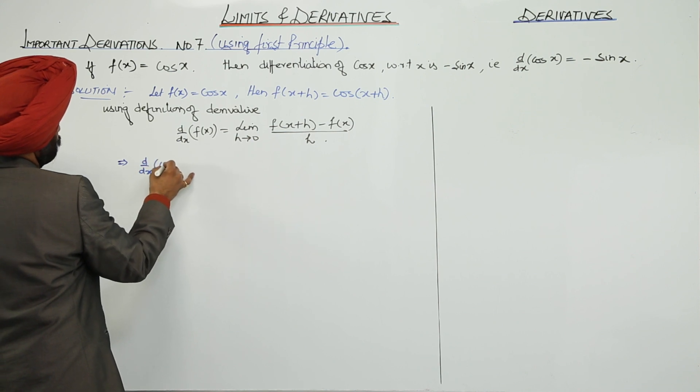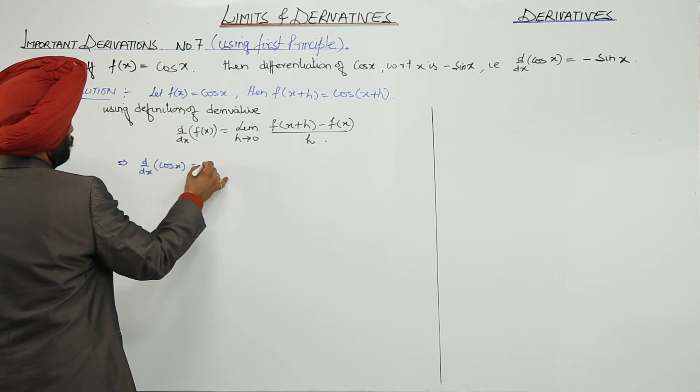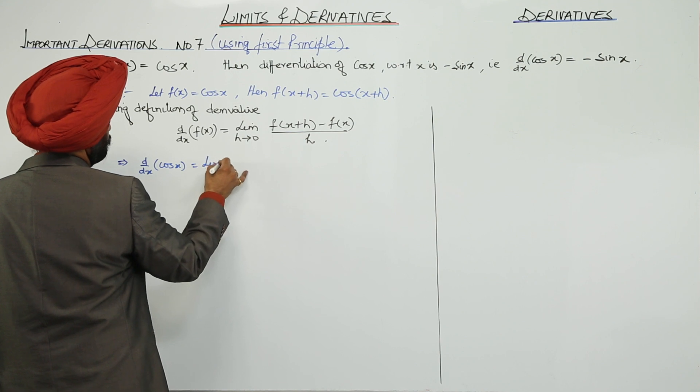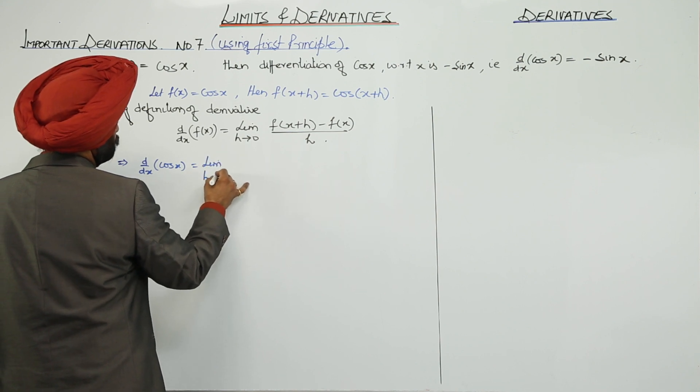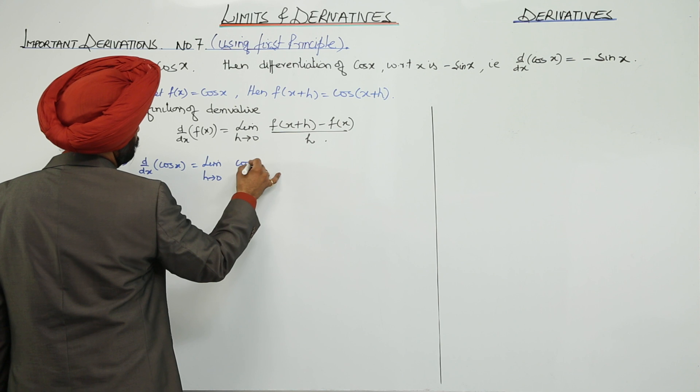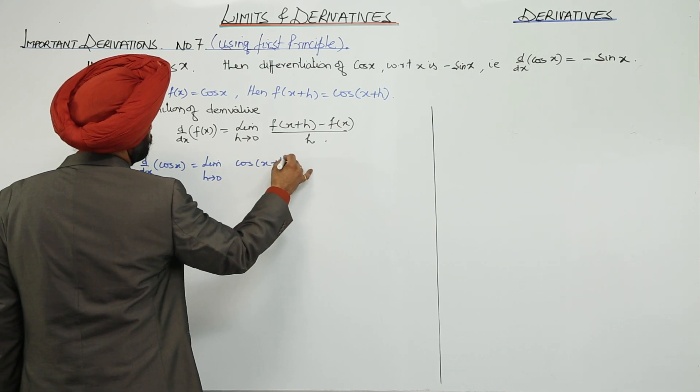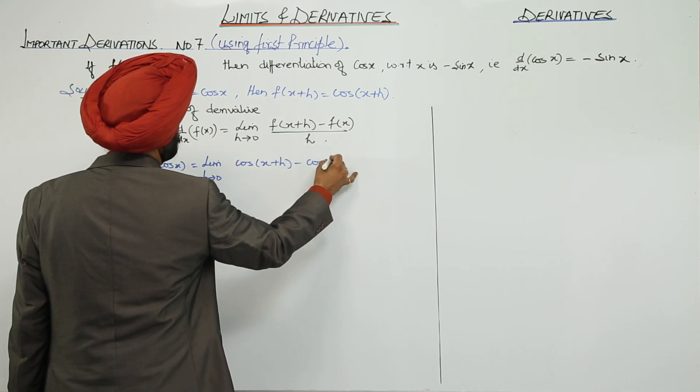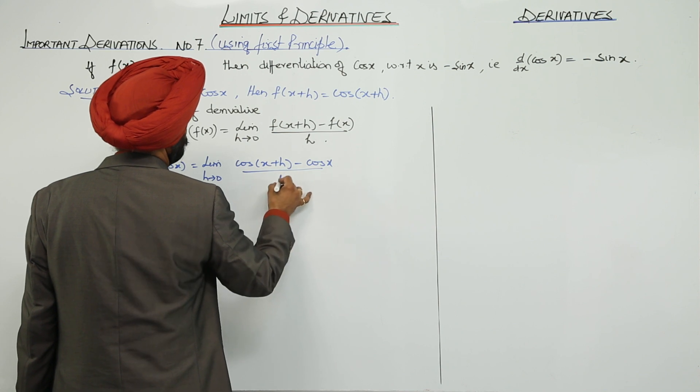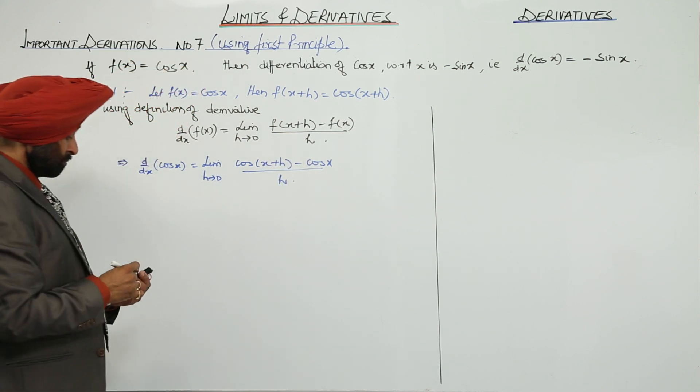So, d by dx of cos x is equal to limit h approaches to 0, cos(x + h) minus cos x upon h.